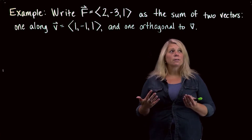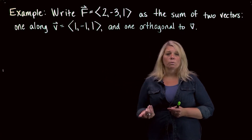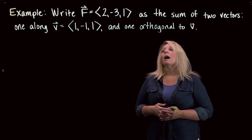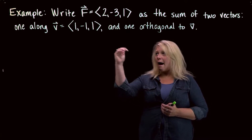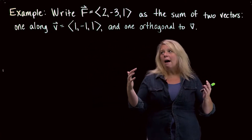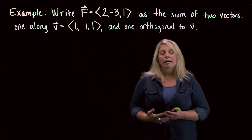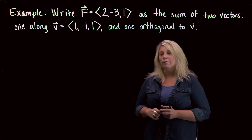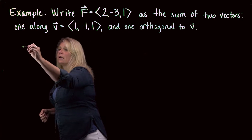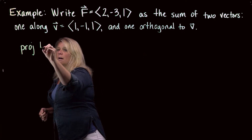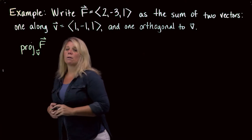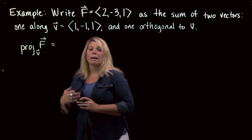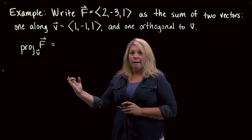Even though this problem does not use the word 'component' or 'projection,' that's really what we're after here. When I want to think about F as the part of F that is along V, that means we're looking at the component of F along V as the scalar. We want a vector though, so we're really after the projection of F onto V.